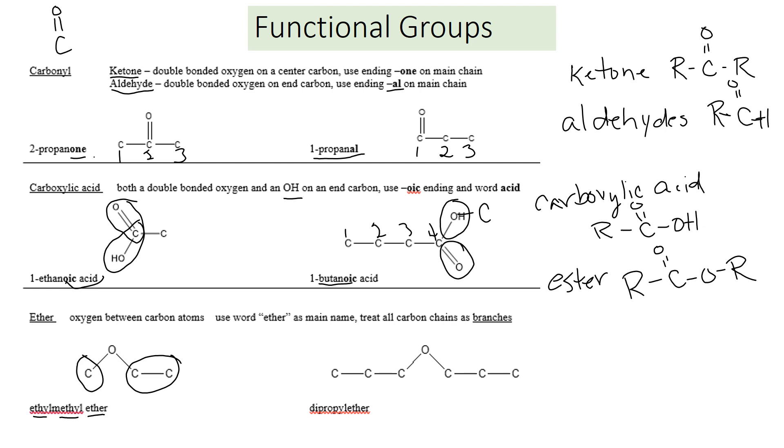This one here, both of our carbon chains have three carbons. That's dipropyl ether. Ether has a carbon group and oxygen and then more carbon groups.